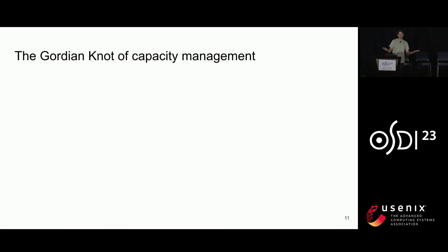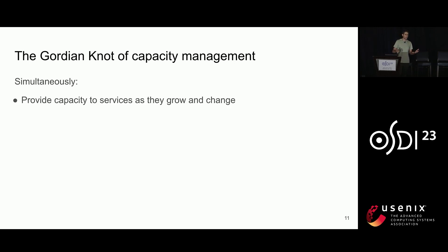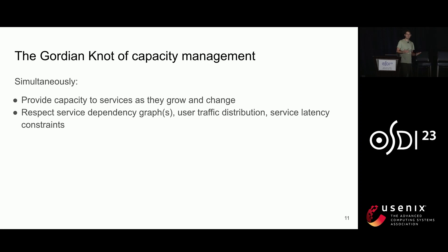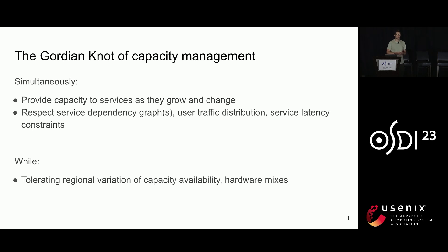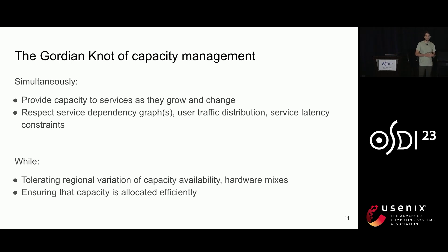This is what I call the Gordian knot of capacity management: we simultaneously have to provide capacity to our services as they grow, while respecting dependency graphs — we can't grant capacity to one service without understanding how it affects others. We also have to understand user traffic distribution, latency constraints, and the regional variation of available hardware. All the while, we must manage our hardware efficiently, since even small decreases in efficiency can have substantial OPEX and CAPEX impact.